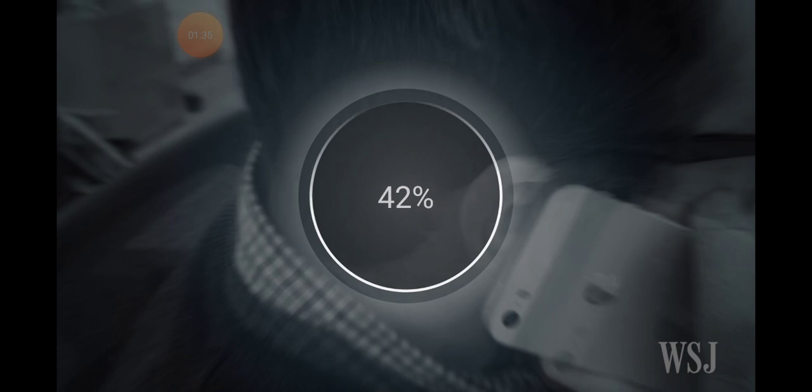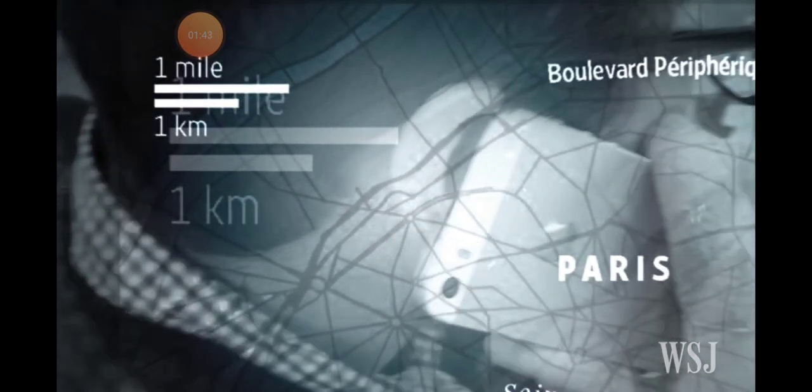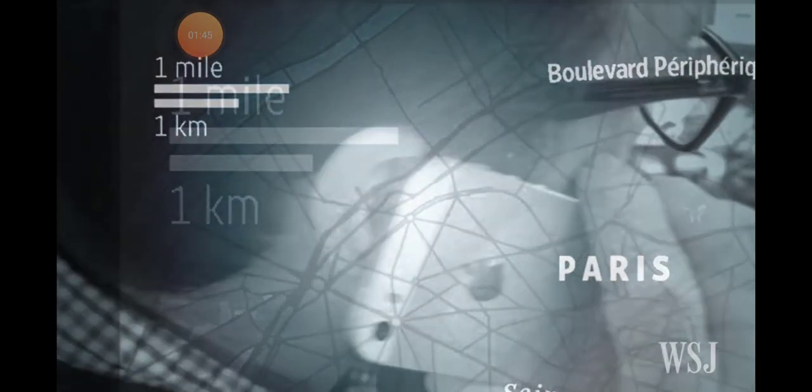To track his movements, the agency can activate the camera and microphone on John's phone without him knowing, and retrieve his geolocation. Even if his cell phone's powered off, the documents describe how the CIA can hack other internet-connected devices to monitor John's activity.